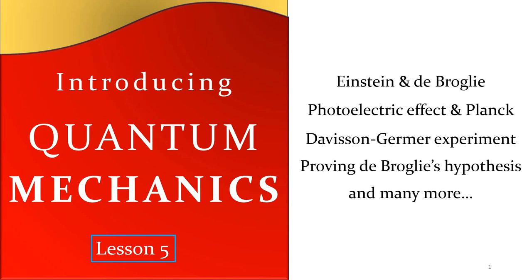We are going to look into some of the basic foundation and important equations like the Einstein de Broglie equation, the photoelectric effect, and the advent of Planck's constant. We are also going to look into the Davison-Germer experiment and how mathematically it proved de Broglie's hypothesis. This would be today's agenda in introducing quantum mechanics and we will see how wonderfully the de Broglie hypothesis has been proved.